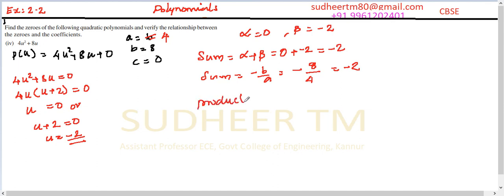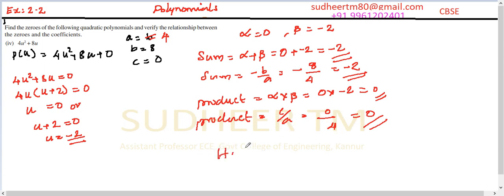Also we have the product equal to alpha into beta equal to 0 into minus 2 equal to 0. Also product by formula is equal to c by a is equal to 0 by 4 equal to 0. So our sum and products are satisfying the relationship with the coefficients, and so hence we verify it.